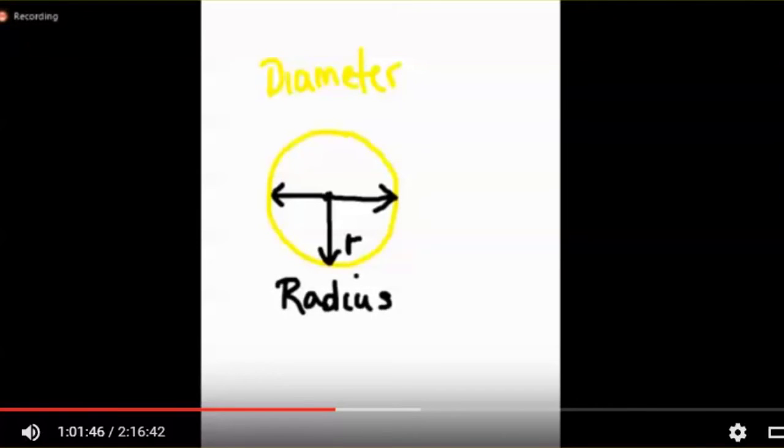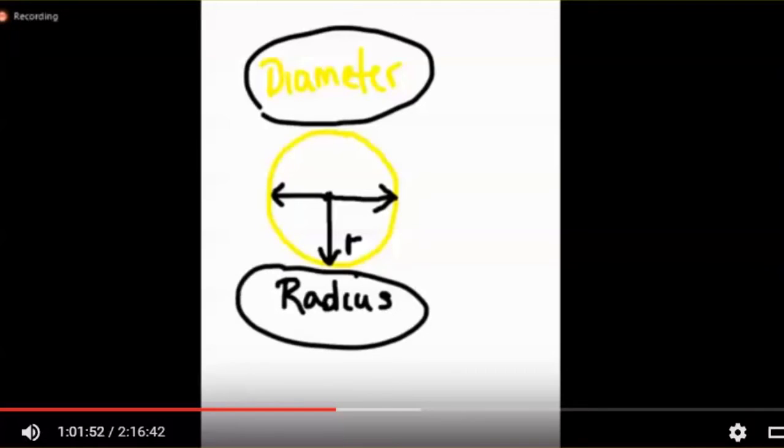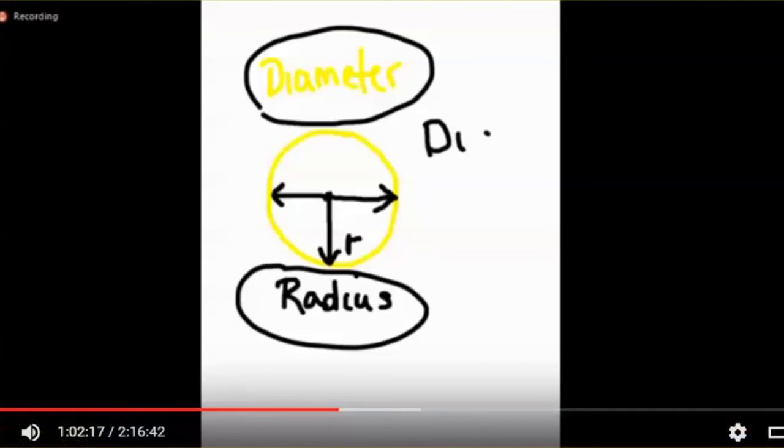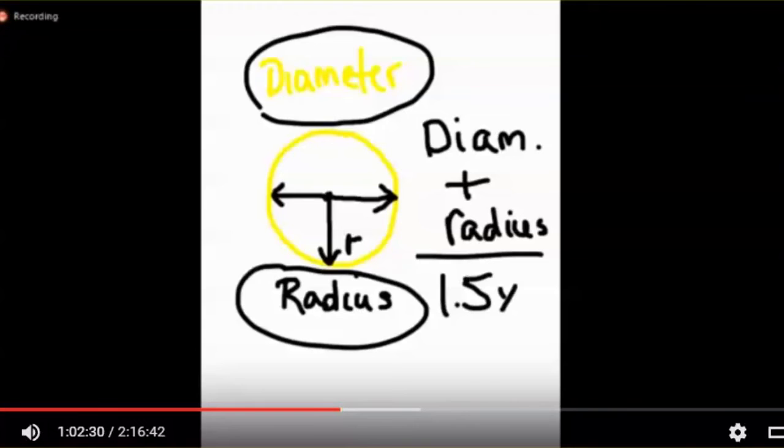Now what you need to do is you need to add the diameter to the radius. So you can just measure it straight across, divide it by two, take that answer, save it off to the side. Now you take the diameter before you divided it by two and add it to your radius. And this gives you one and a half times the distance.